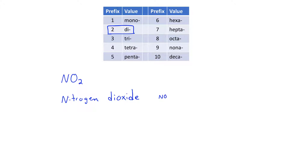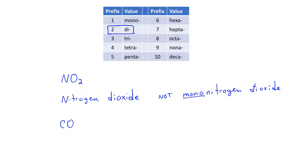This is not going to be named mononitrogen dioxide, because we don't include mono in front of the nitrogen unless there's more than one. If the first element is present just one time, we can omit the mono. However, if the second element is present just one time, we do add the mono. So for CO, it's going to be carbon monoxide.